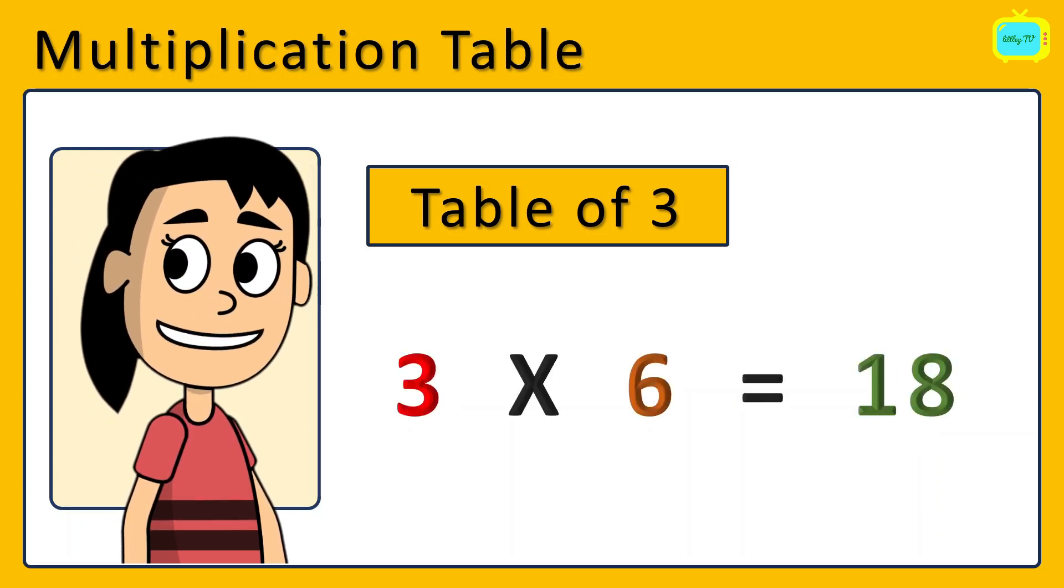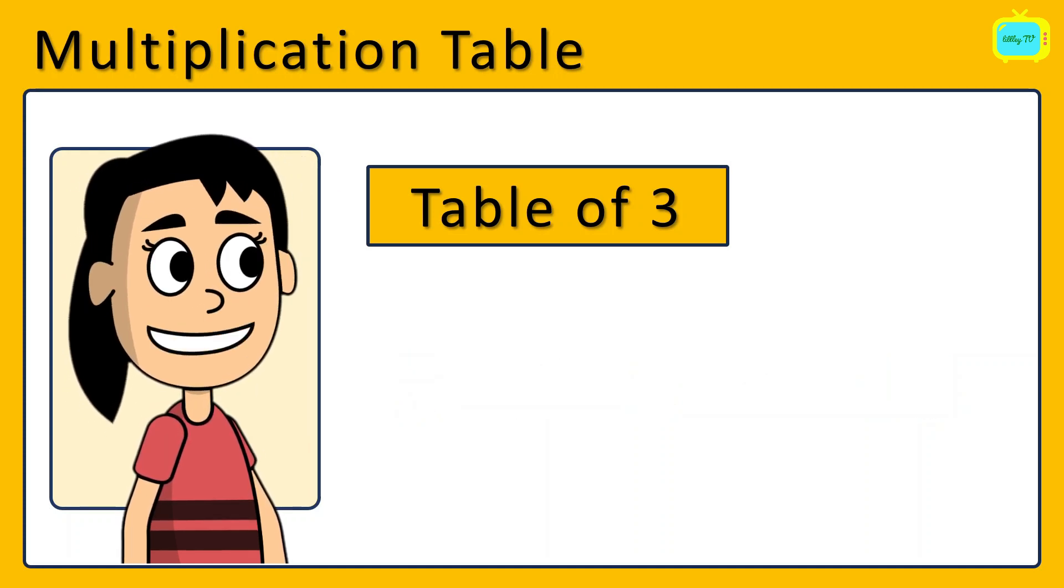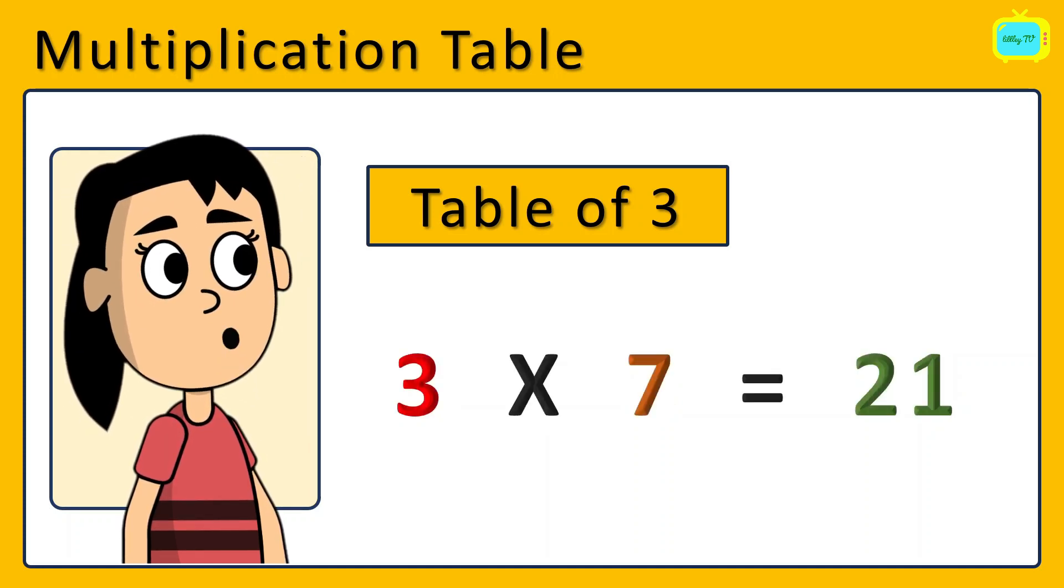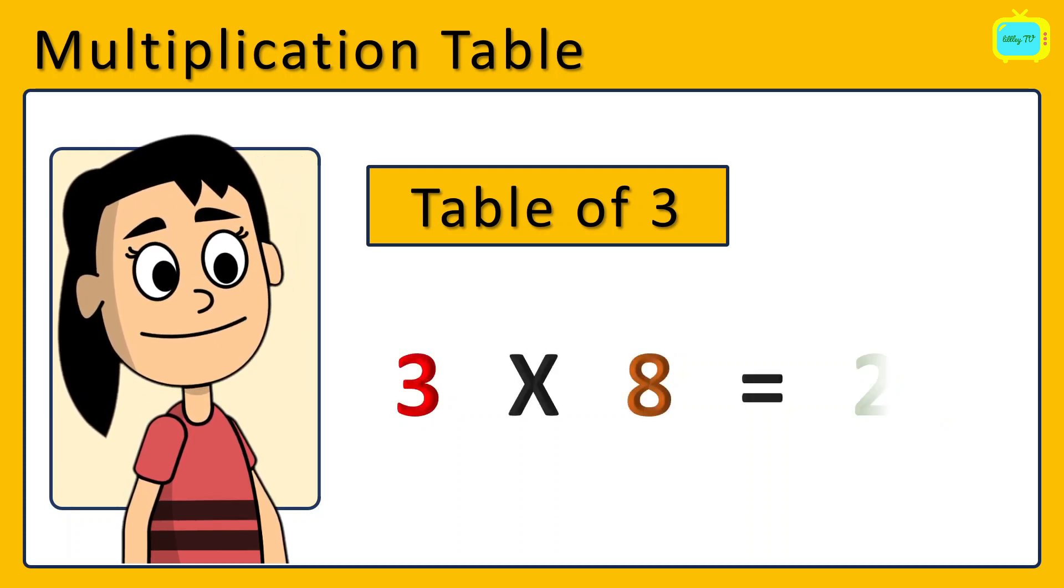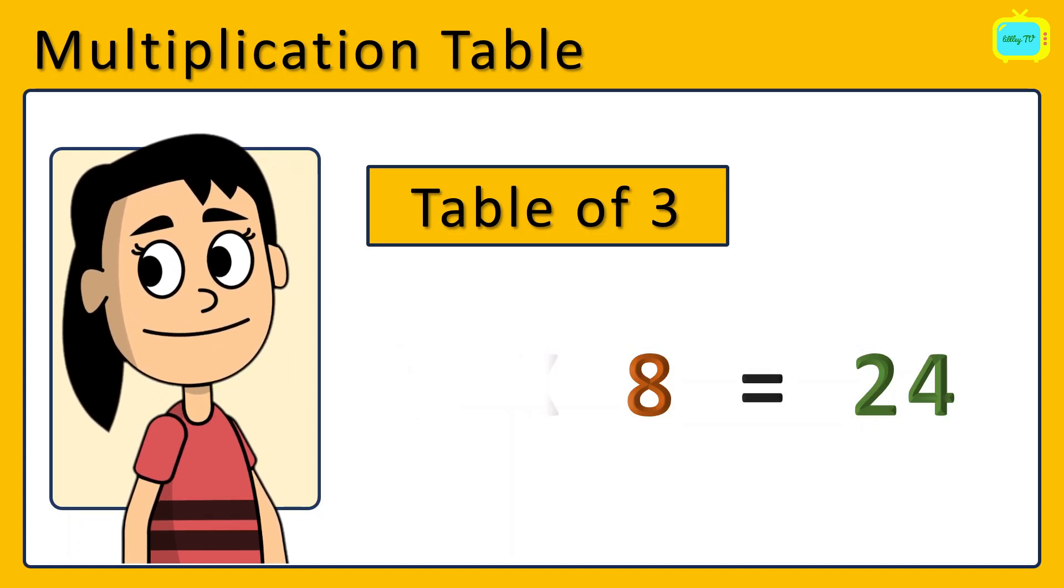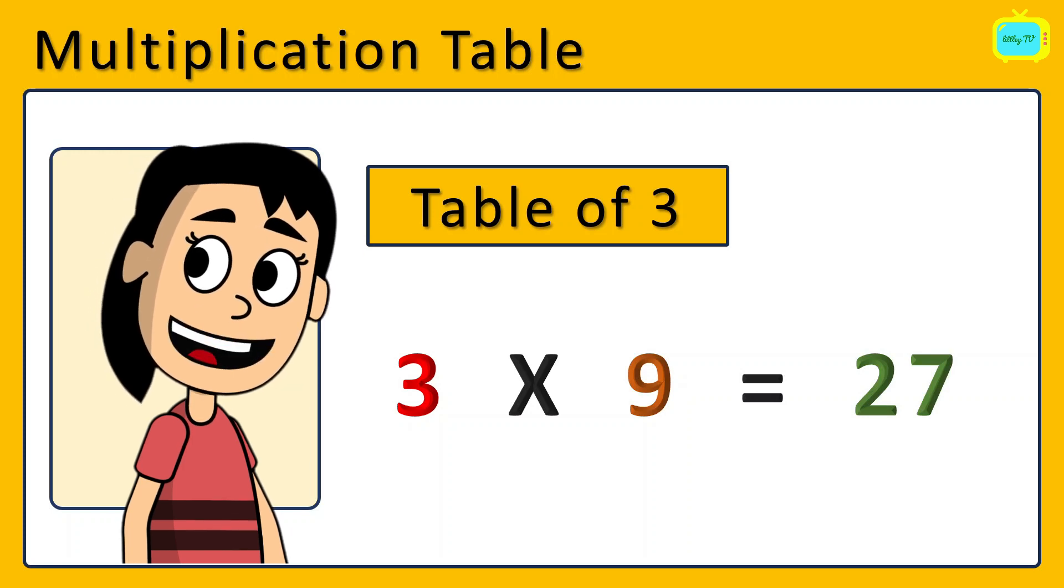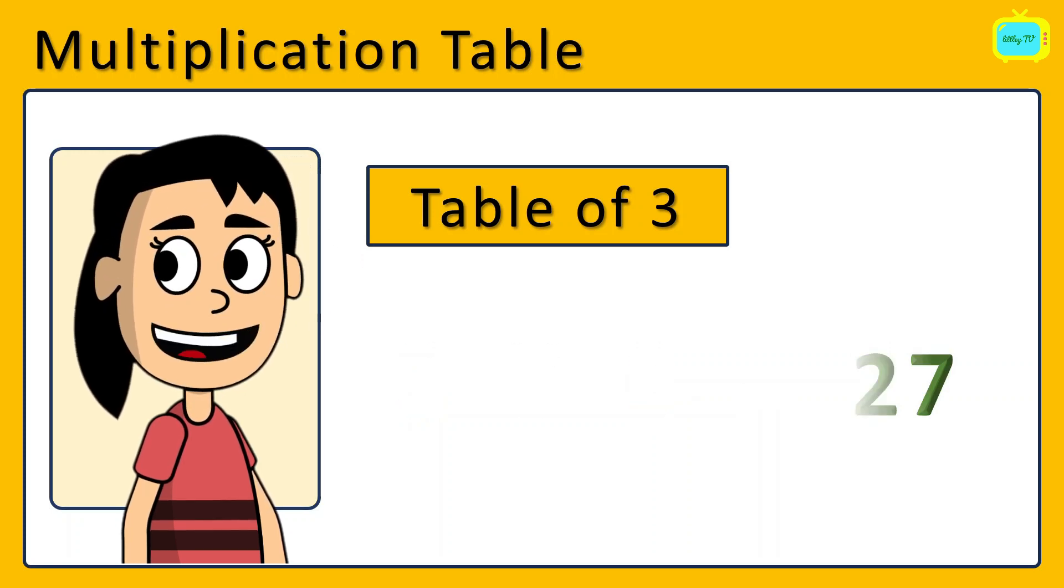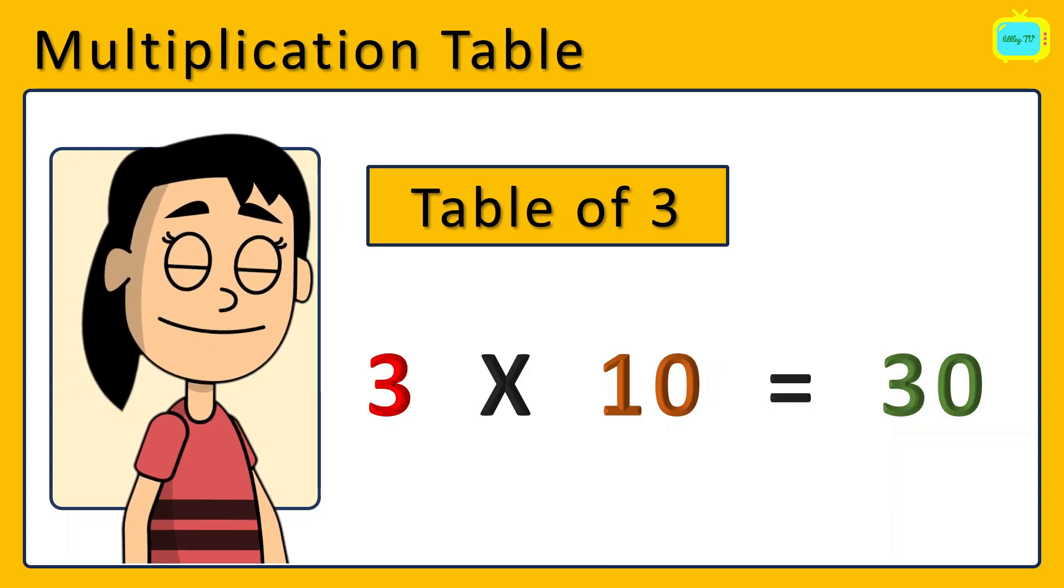3 times 6 is 18. 3 times 6 is 18. 3 times 7 is 21. 3 times 7 is 21. 3 times 8 is 24. 3 times 8 is 24. 3 times 9 is 27. 3 times 9 is 27. 3 times 10 is 30. 3 times 10 is 30. So kids,